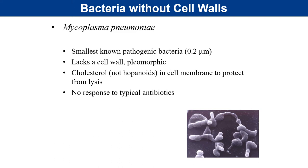Beyond the gram stain, other bacteria lack cell walls altogether and therefore are neither gram positive nor gram negative. These include mycoplasma species — not to be confused with mycobacterium, which have mycolic acid in their cell walls. Mycoplasma lack a cell wall entirely. The most important species is Mycoplasma pneumoniae, whose species name implies it causes pneumonia — fluid buildup in the lungs.